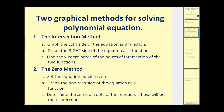We're going to talk about two graphical methods for solving polynomial equations. The first is the intersection method, where we graph the left side as y one and the right side as y two, then find the x-coordinates of the points of intersection. On the zero method, the x-intercepts will be the solutions.